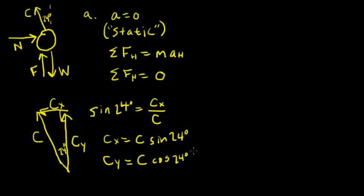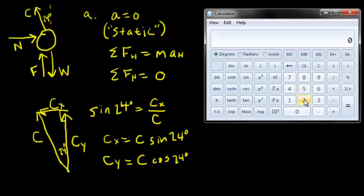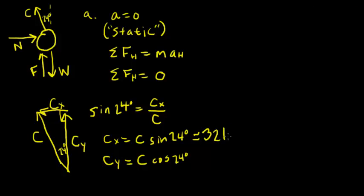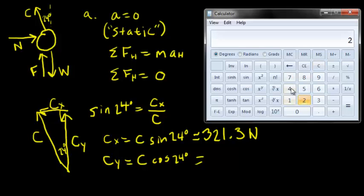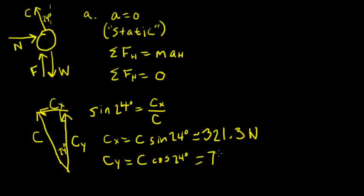So if I go to my calculator, I can find the sine of 24 degrees. So I say 24, and I multiply by the value of C, which is 790. And I find that the horizontal component is equal to 321.3 newtons. And I can do the similar calculation for the cosine. And I find that the vertical part is 721.7 newtons.